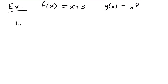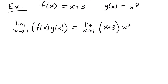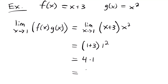Next, we look at the limit as x approaches 1 for f of x multiplied by g of x. Just like before, we plug in these functions: the limit as x approaches 1 of (x plus 3) times x squared. We can just plug 1 in directly, giving us the quantity 1 plus 3 times 1 squared, which equals 4 times 1, which equals 4.